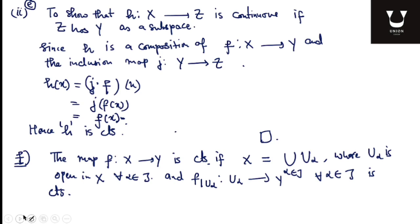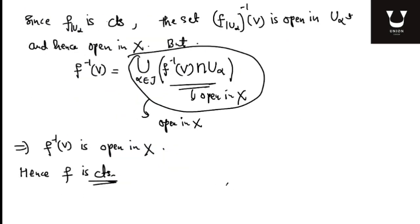This completes the proof. This was about the rules for constructing continuous functions between topological spaces. Next, I will talk about the pasting lemma, which is a very important lemma that frequently appears in algebraic topology as well. With this I will stop.